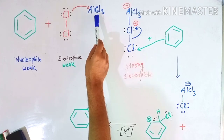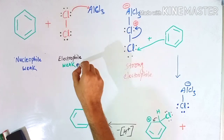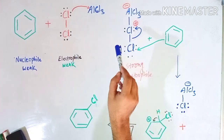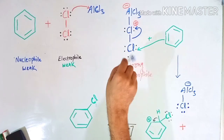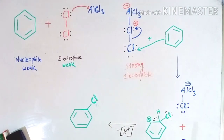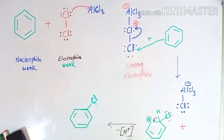This is the trigger point: AlCl3 activates the weak electrophile into a strong electrophile and the whole mechanism starts automatically. In this way, AlCl3 is regenerated at the end of the reaction and is again ready to catalyze more reactions. This is all about the chlorination of benzene.